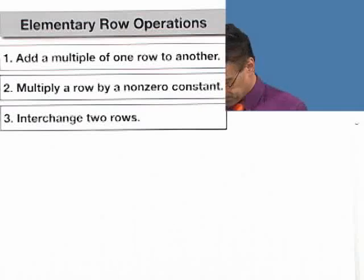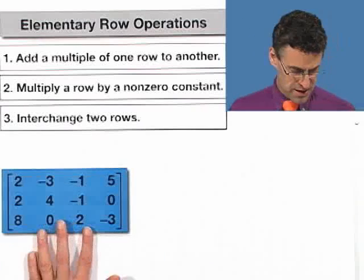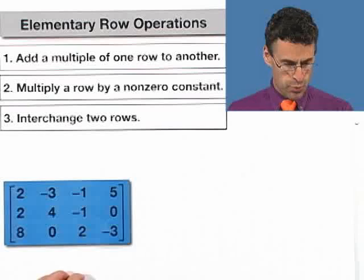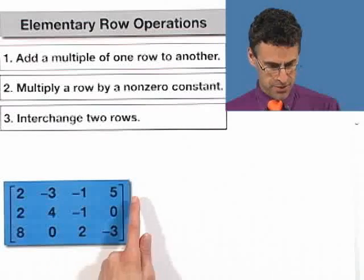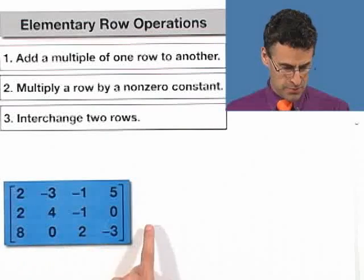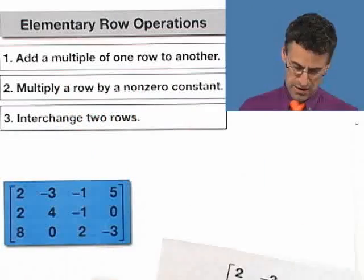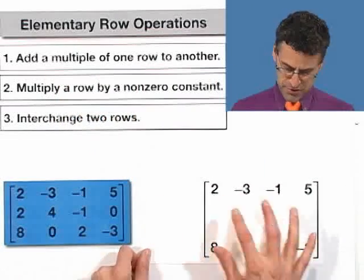How about one last one just for fun? Here's a matrix, and I want to add negative 1 times the first row to the second row, which again is kind of property 1 here, adding a multiple of one row to another.